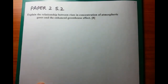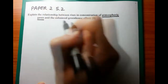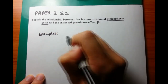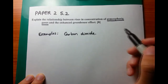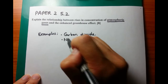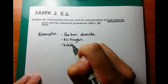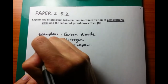For today's question, we're going to explain the relationship between rises in concentration of atmospheric gases and the enhanced greenhouse effect. This is a total of eight marks, so it's a big question. The first thing we're going to do is talk about the atmospheric gases and give some examples. Most obviously, carbon dioxide. Second most obviously, nitrogen. Least obviously is water vapour. If you give a few examples, this will get you at least a couple of marks.